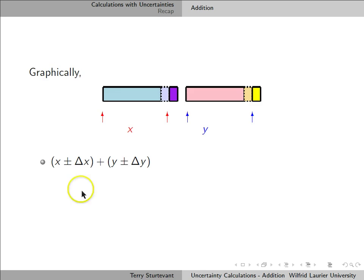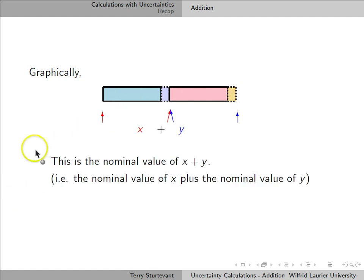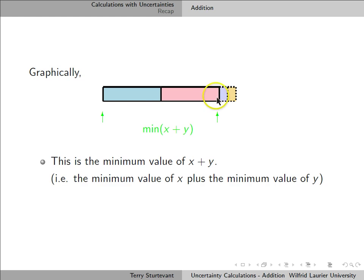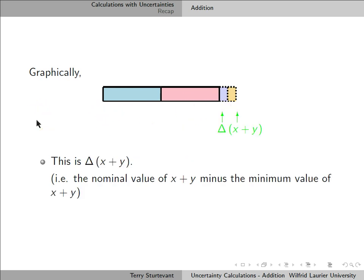Graphically, we can look at it like this. This bar represents the value x, and these two little purple bars represent the uncertainty in x. This pink bar represents y, and these two little yellow bars represent the uncertainty in y. Adding them together is like putting them end to end, so the nominal value of x plus y is just the length of the whole bar. If we redraw it to put the uncertainties at one end, the minimum value of x plus y is the value ignoring the two little uncertainty bits on the end. So the uncertainty in the sum is the difference between the nominal value and the minimal value, which is delta x plus delta y.